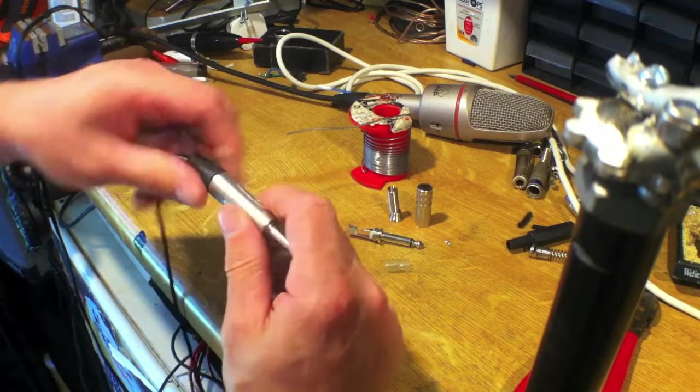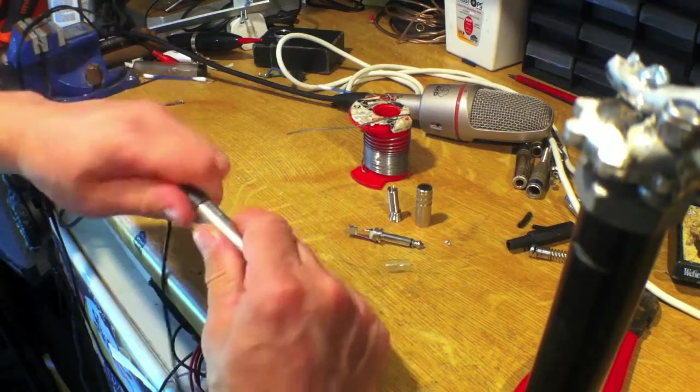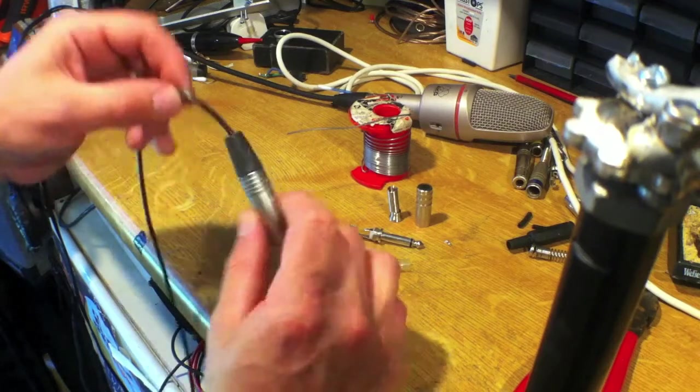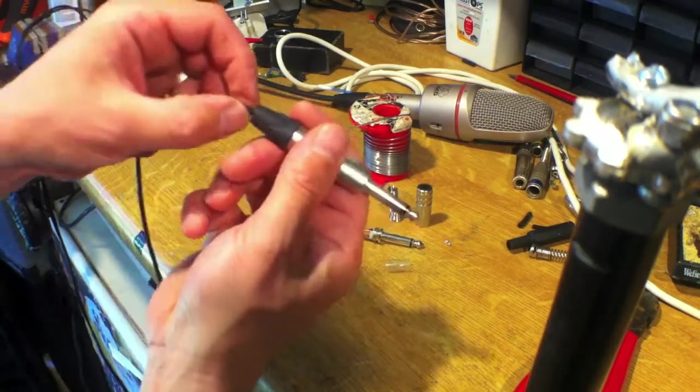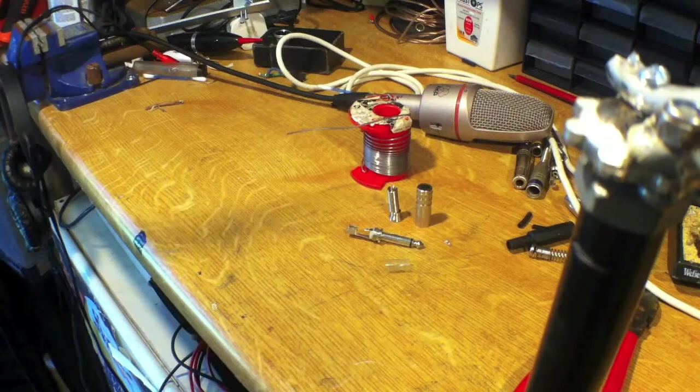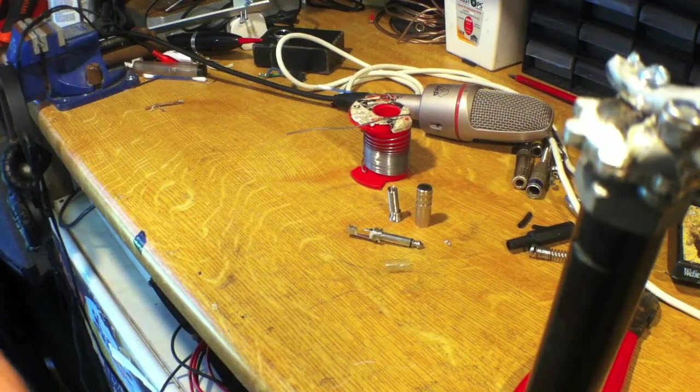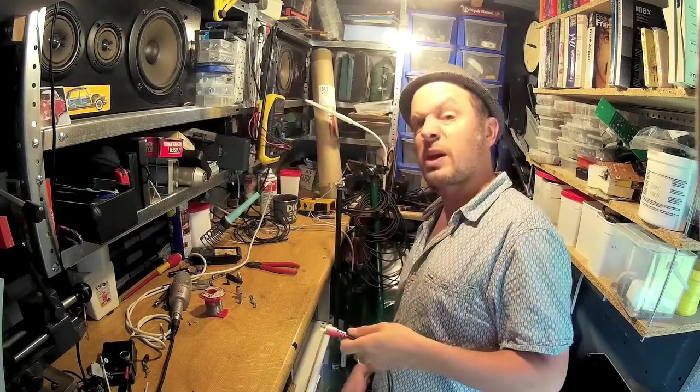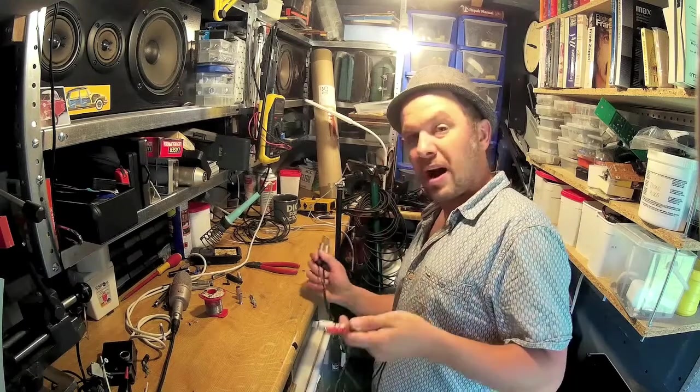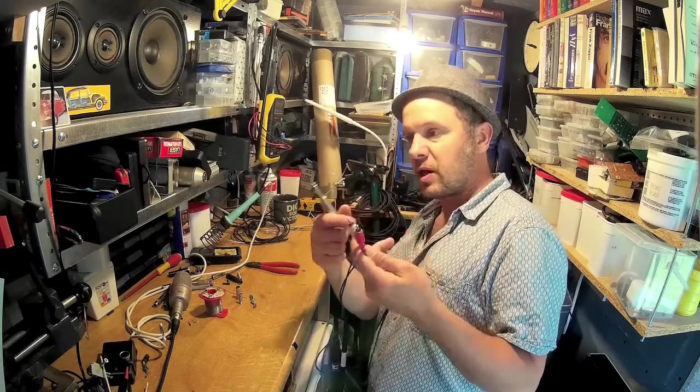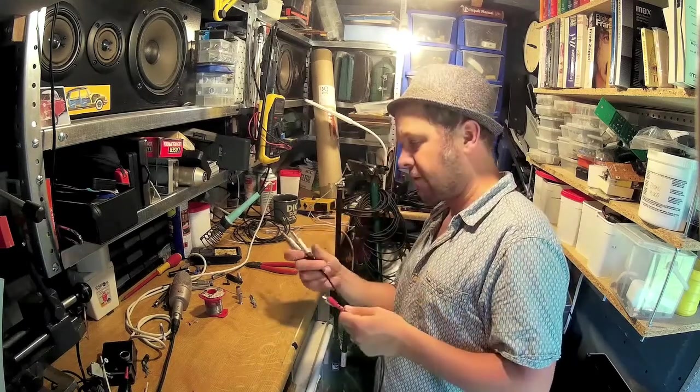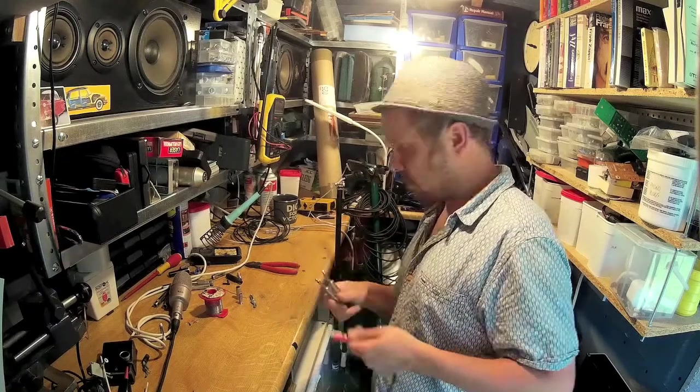The good thing about the Neutrik stuff is it's very flexible with the cable width that you use. At the moment there's a very narrow cable going in there because this is just one of those phono to phono leads that come with your stereo system. When I have those I just convert them into things like this, just useful cables you can have for when need arises.